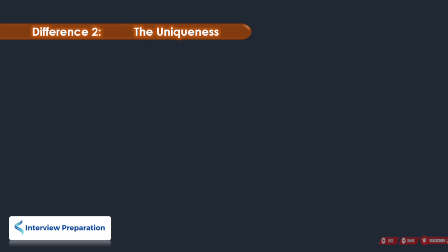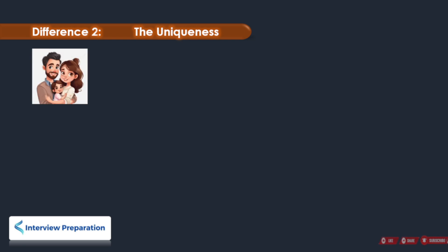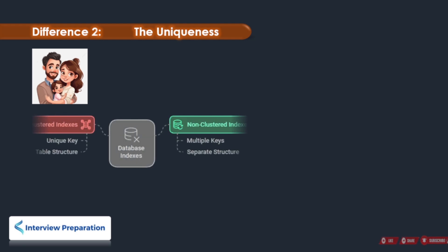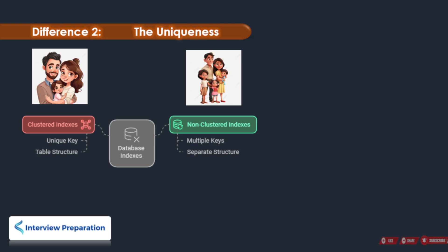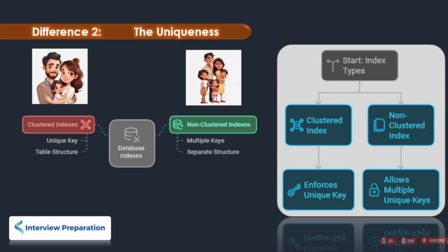The second difference is uniqueness. Imagine a clustered index as a strict parent — they only allow one unique key to be the primary key of the table, meaning there can only be one unique value in the column. Now, non-clustered indexes are more relaxed; they're like a cool auntie who lets all the kids, or unique keys, be special. You can have multiple unique keys pointing to the same table. So, if you need strict order and only one unique key, a clustered index is the way to go. But if you want more flexibility and can have multiple unique keys, a non-clustered index is your best friend.